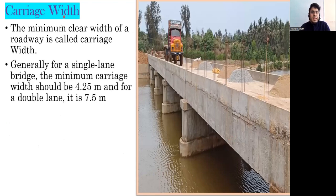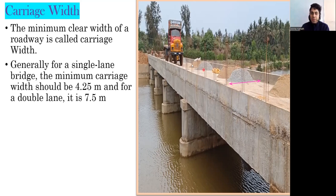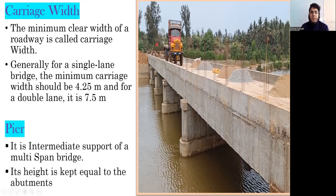Next is carriage width — the minimum clear width of a roadway on a bridge is called carriage width. For a single-lane bridge the minimum carriage width is 4.25 m. For a double-lane bridge the carriage width increases to 7.5 m.